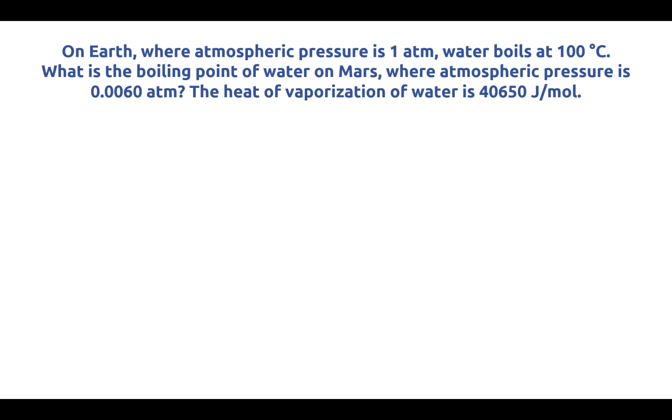Let's evaluate the information given to us. We are given two pressure values, which is exactly what we need. We're given a heat of vaporization in joules per mole. We're also given two temperature values, although one of them is our unknown. 100 degrees Celsius is one temperature, and the unknown boiling point of water on Mars is what we're solving for. This is a prime example of when to use Clausius-Clapeyron because everything is known except for that one temperature value.